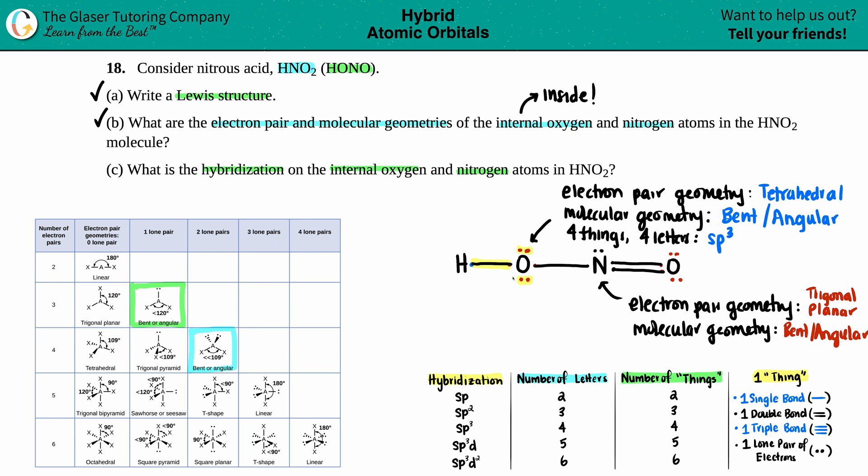Let's do the same thing for the nitrogen. So I'm just going to get rid of these. So now we focus what's going on around the nitrogen. Well, the nitrogen has one single bond. That's one thing. I see it has a double bond, even though there's two lines that's still classified as one thing. So I have two total things, lone pair, three things. So three things, three letters, SP2.